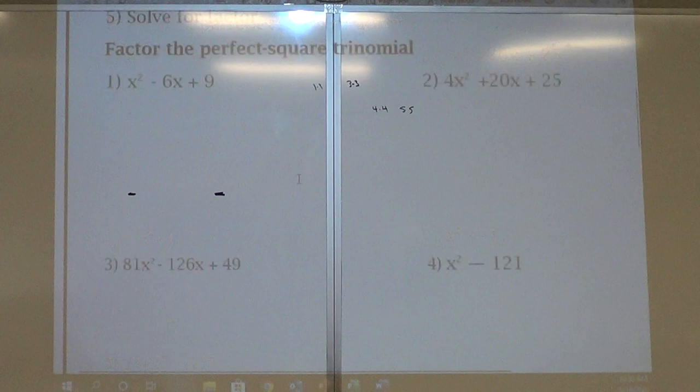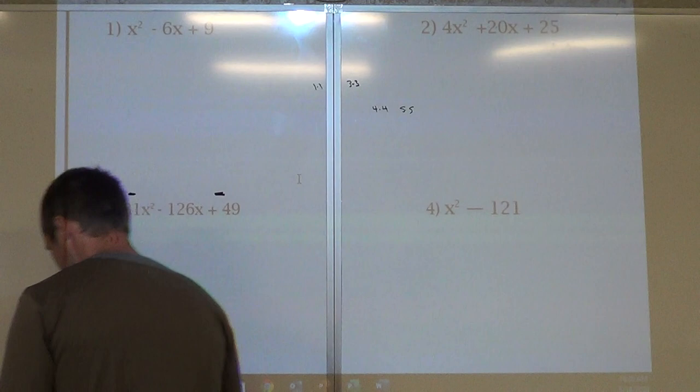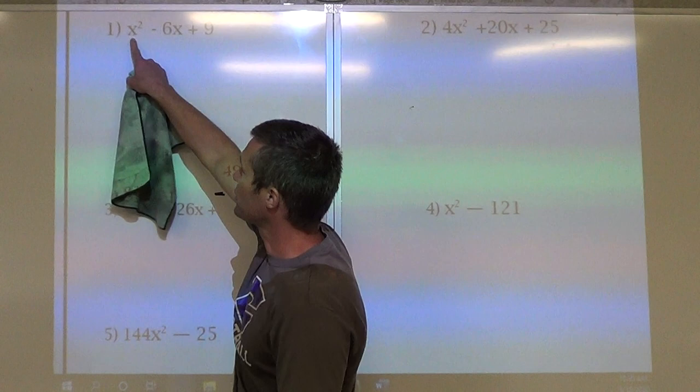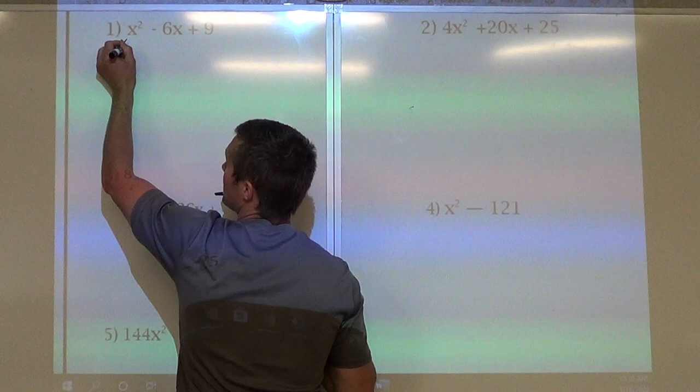So starting out with these ones. As I look at it, first number, x squared, so that's a perfect square. x times x gives me x times x.